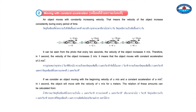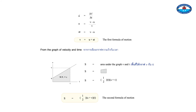If we consider an object moving with beginning velocity of u meters per second and constant acceleration of a meters per second squared, in t seconds the object will move with velocity of v meters per second for s meters. The relation of these amounts can be calculated from the graph of velocity and time.